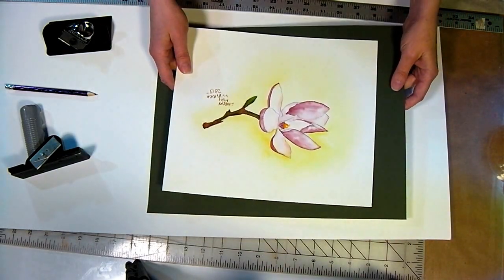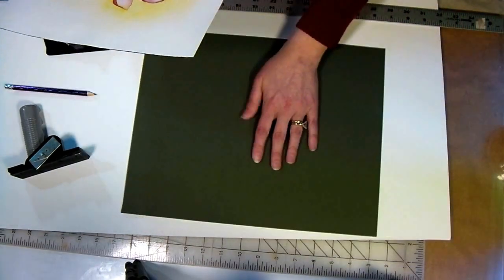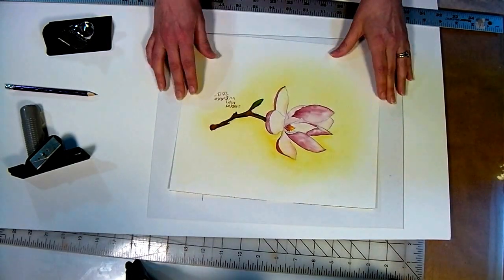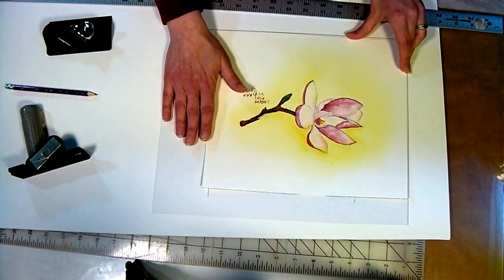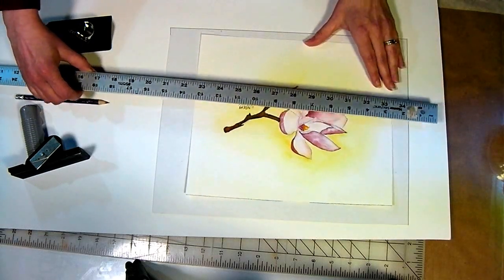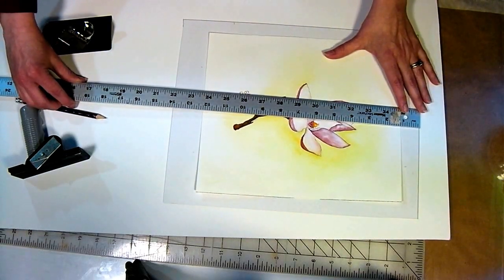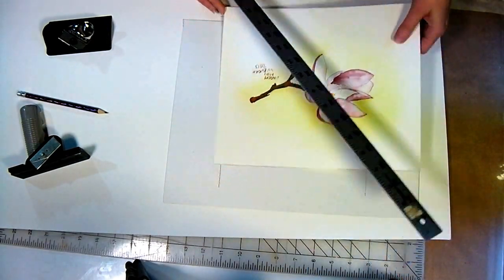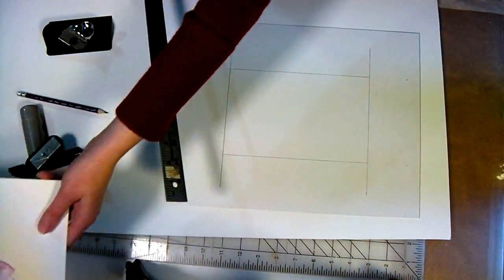The first thing you want to do is, this is the front side of the mat, is a kind of avocado green. You want to flip your paper over and your mat over, and you want to figure out about how much of a border you want. I decided that I wanted about a three inch border all the way around on this painting, so I've already marked that off and drew my rectangle in the middle.